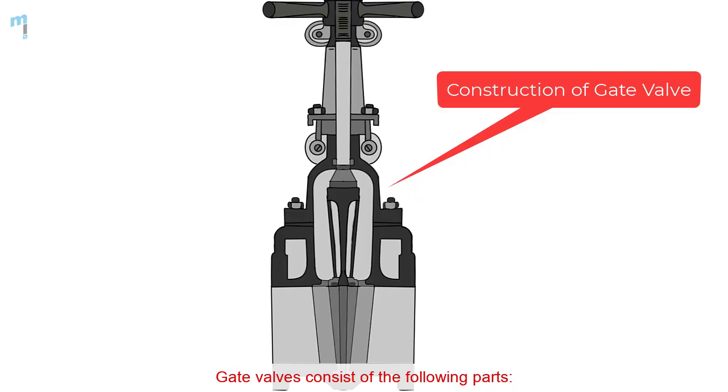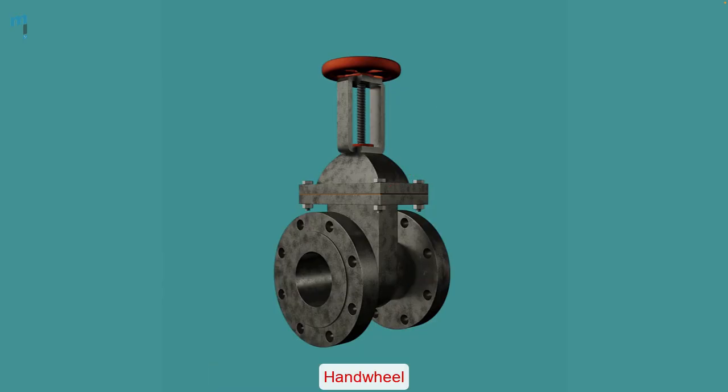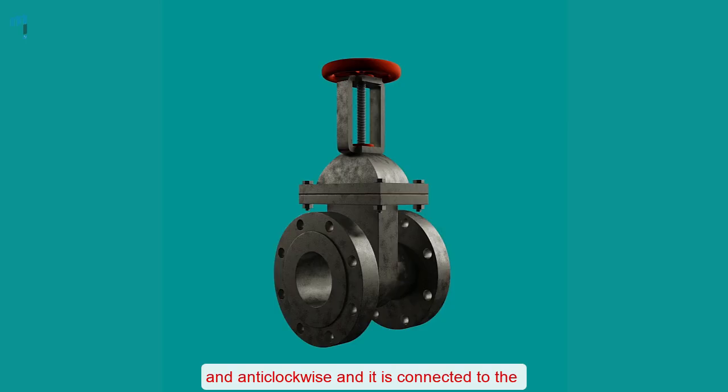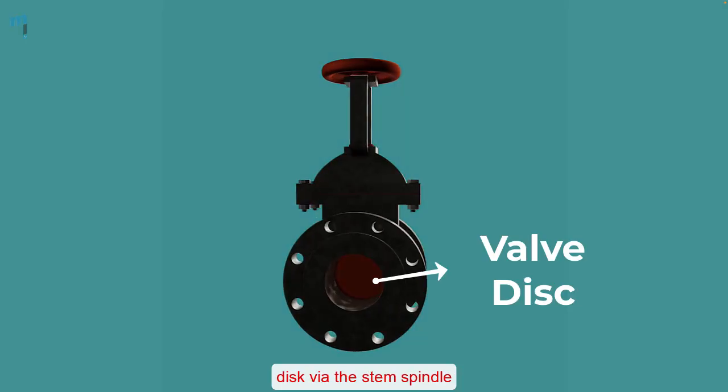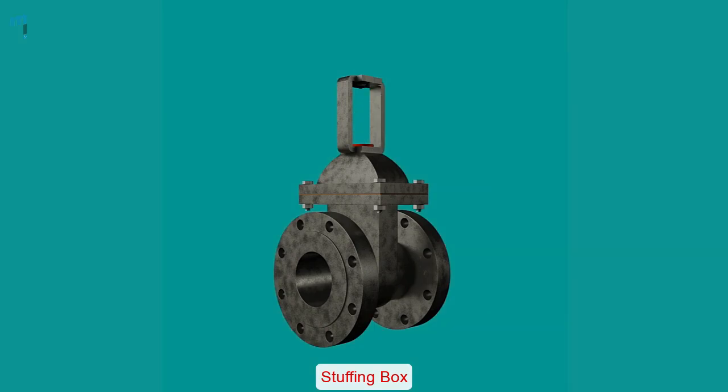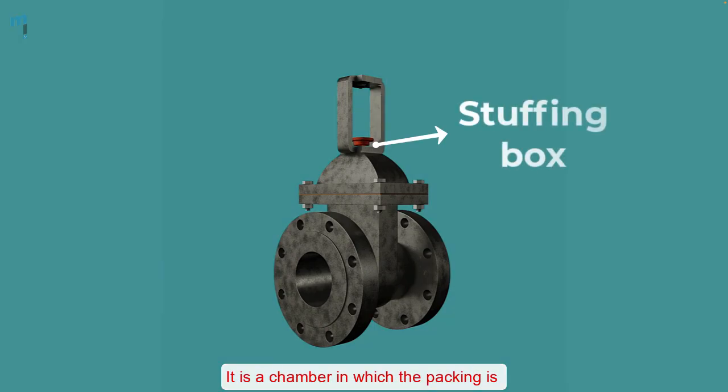Gate valves consist of the following parts. Hand wheel: This is a wheel that is rotated clockwise and anticlockwise and it is connected to the disc via the stem spindle. Stuffing box: It is a chamber in which the packing is compressed to avoid leakage from the stem spindle.